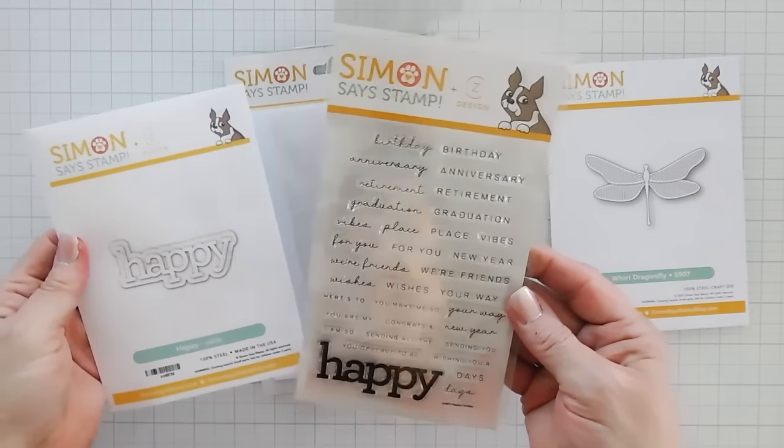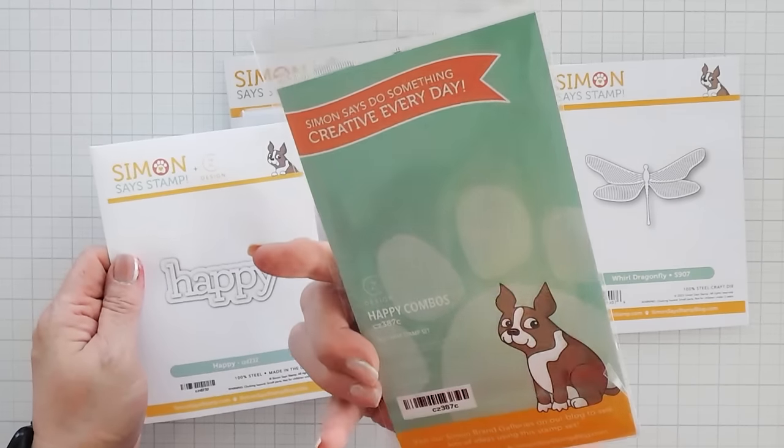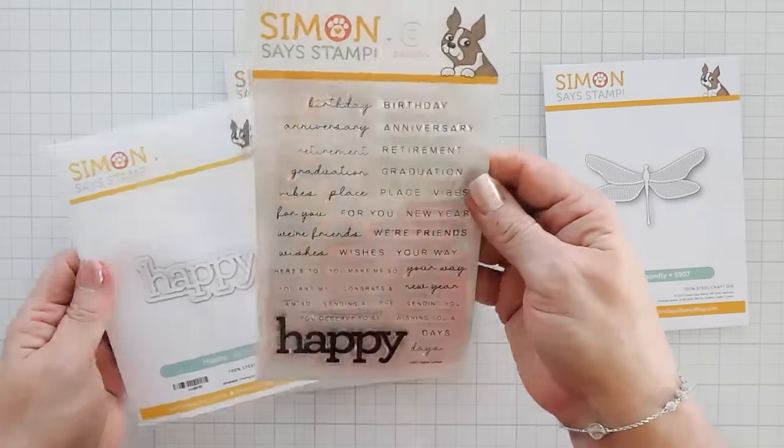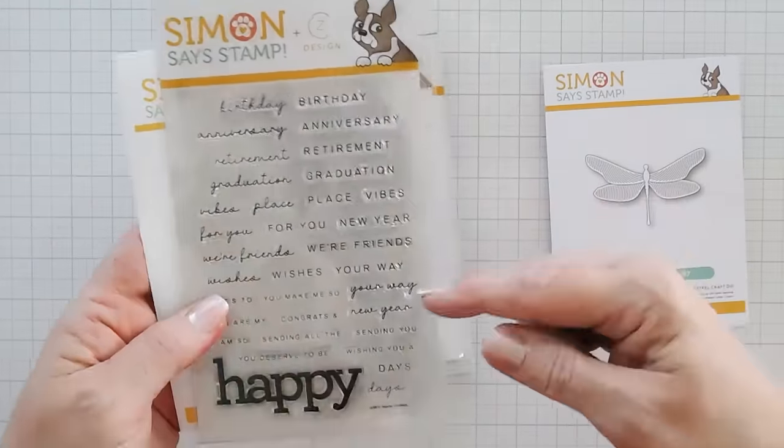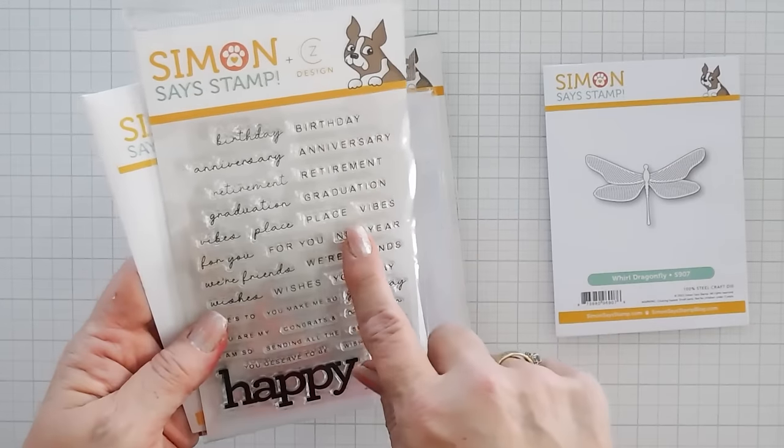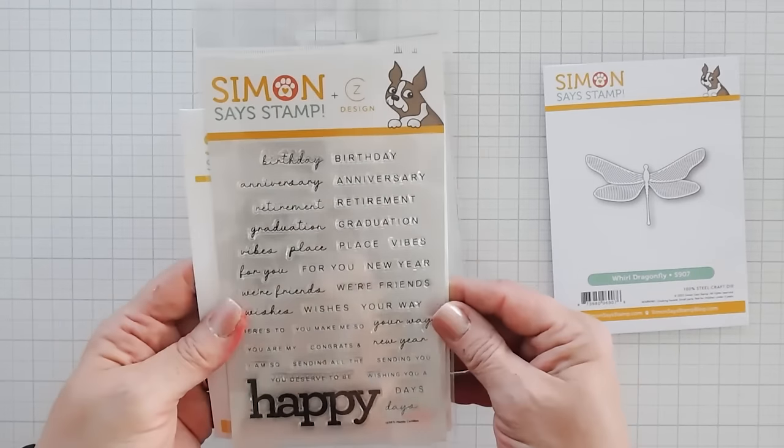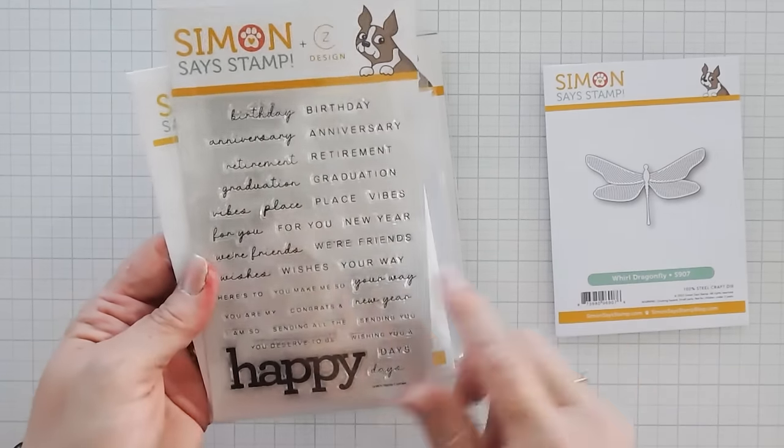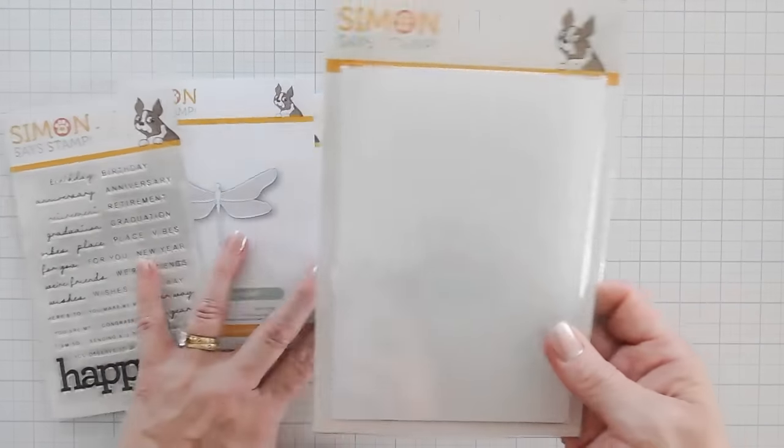And it coordinates beautifully with the four-by-six stamp set called Happy Combos from CC Designs. I love that they're scripty sub-sentiments or pre-sentiments. And then there's just about every occasion you can imagine in this Happy stamp set. I love this. We'll be using this on our card today.